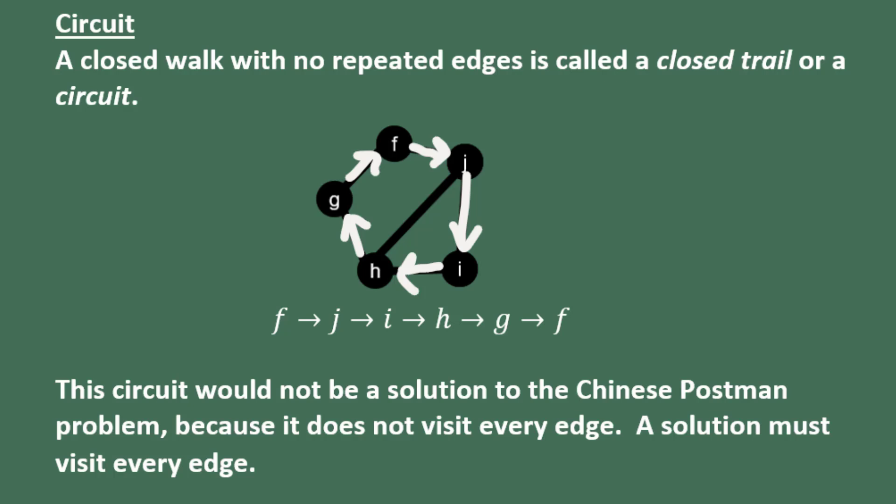This circuit would not be a solution to the Chinese postman problem. Why? Because we can't leave people without their mail. A solution has to visit every edge. In fact, the best we can do in this graph would be a closed walk that visits every edge at least once. We can't find a circuit because we would have to repeat some edges. We'd have to do some backtracking. In this case, if I continued on from J to H, in order to get back to my original vertex, I'd have to repeat GH and GF.